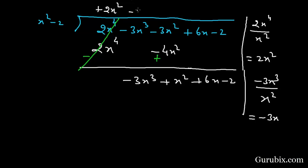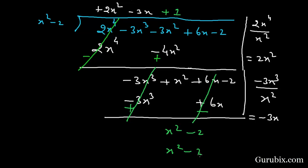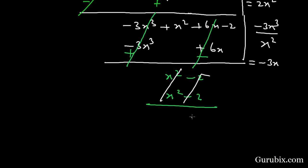So the next term in the quotient is minus 3x. Multiplying minus 3x with x² minus 2 gives minus 3x³ plus 6x. We change the sign and cancel these values. We are left with x² minus 2, and x² minus 2 goes exactly once, giving x² minus 2. These two values are also cancelled out, so the remainder is 0.